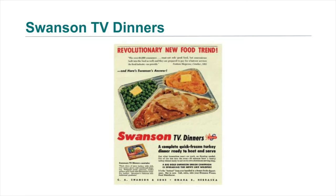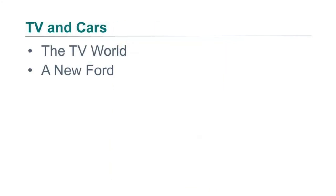The actual box that contained the TV dinner looked like a TV set, with separate categories like a cafeteria tray for different food items. Within a year, Swanson sold 25 million dinners. Although many people complained they were unhealthy and the food wasn't very good, they were enormously successful. TV and cars are really the big things that defined the 1950s in American life.